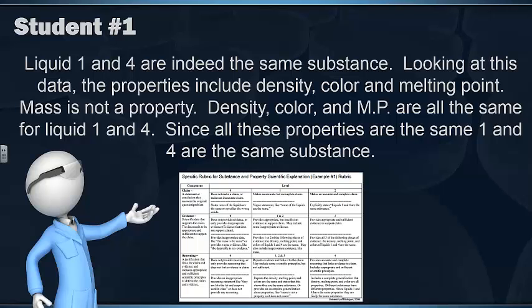Now let's look at their reasoning. That would be looking at this data, the properties include density, color, and melting point. Mass is not a property. And then the other piece of reasoning, since all these properties are the same, 1 and 4 are the same substances.